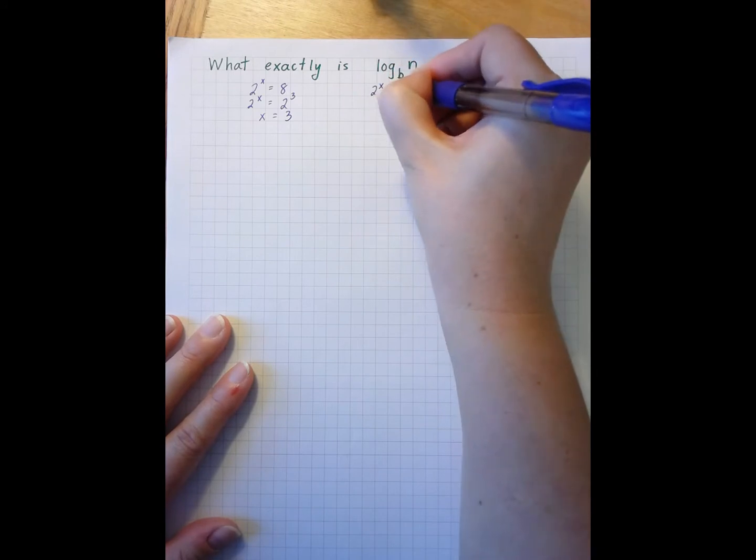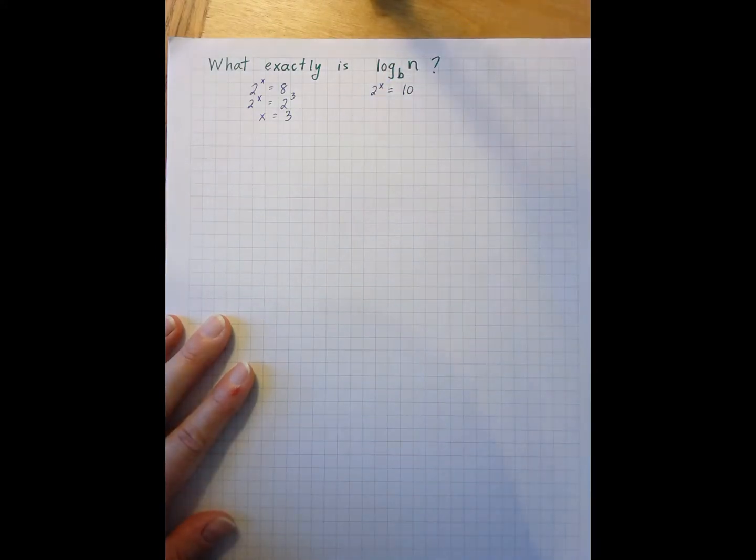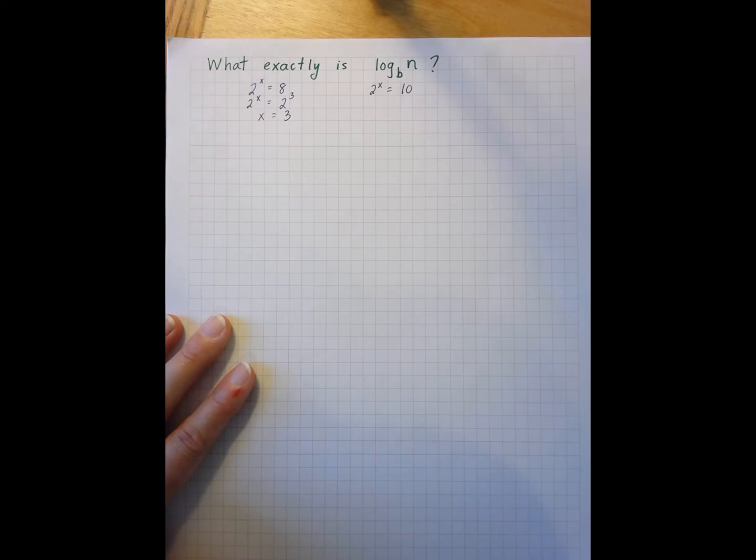However, if I have 2 to the x equals 10, there's no way for me to rewrite 10 as 2 to some power. And so mathematicians had to come up with a method and an inverse operation in order to find out what that x would be.